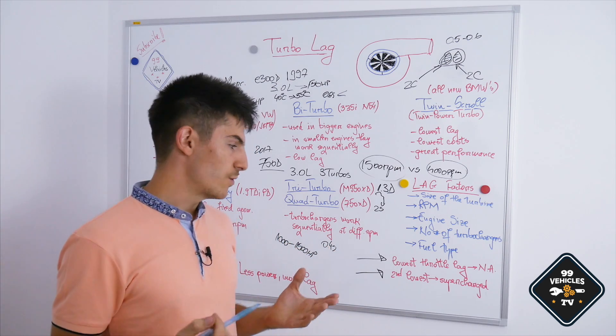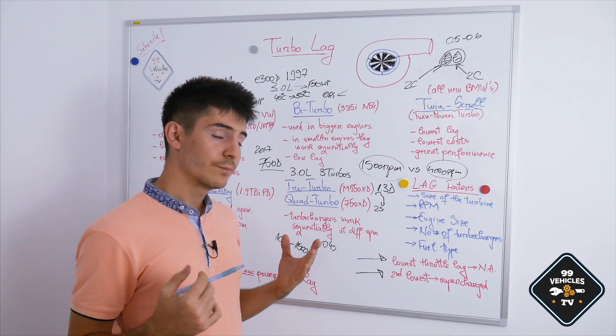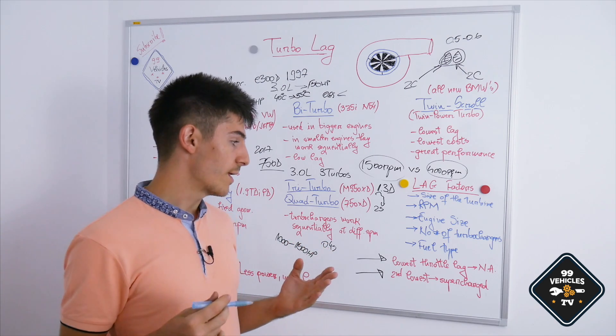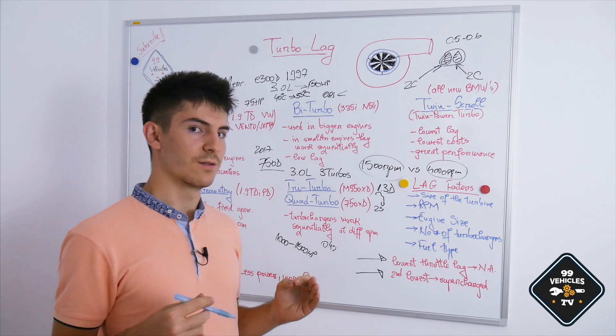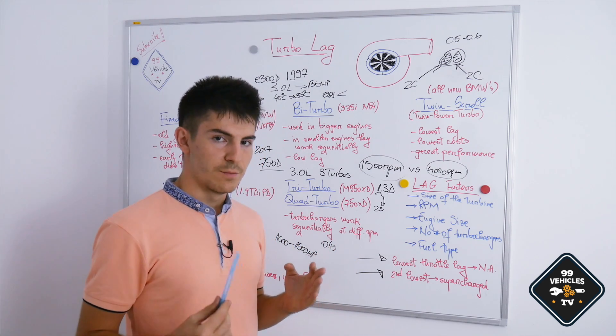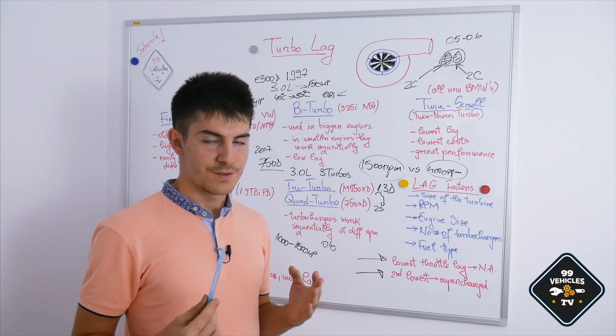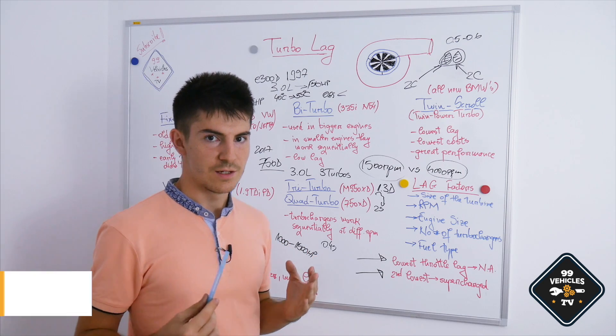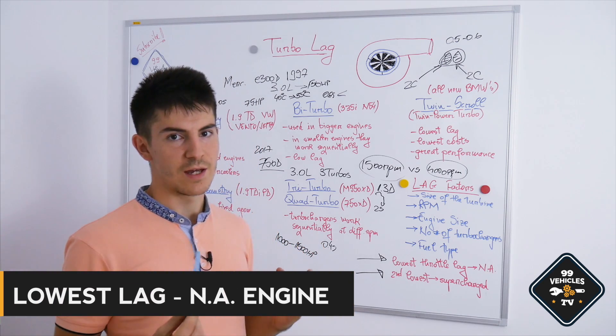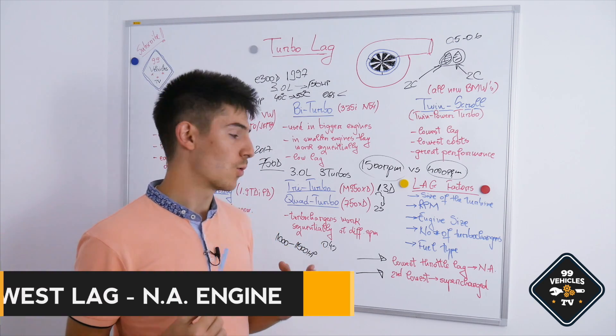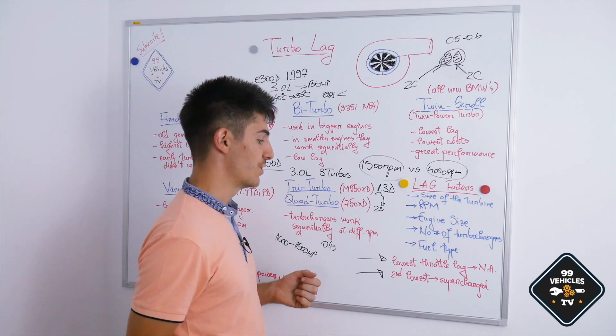And of course, the fuel type. I have noticed that in gasoline engines, turbo lag is slightly smaller compared to diesel. Now, keep in mind, if you want to have the best possible throttle response, the smallest delay in a production car, you will need to have a naturally aspirated engine or at least a supercharged engine.